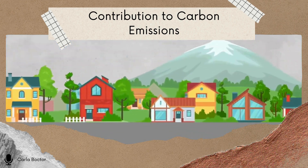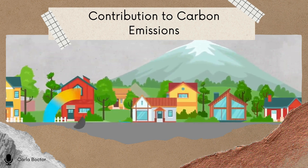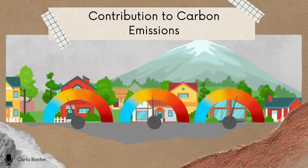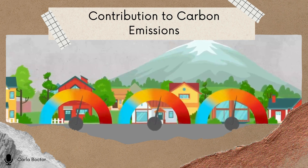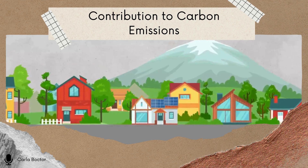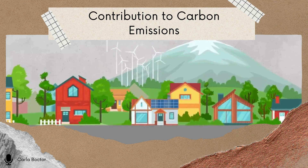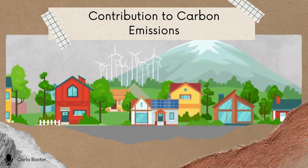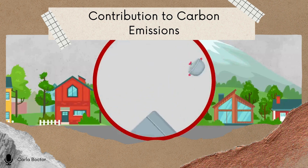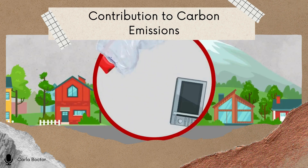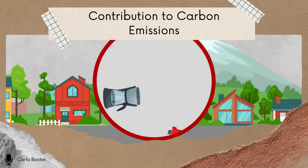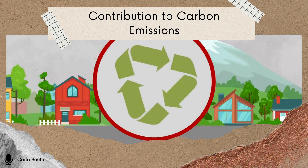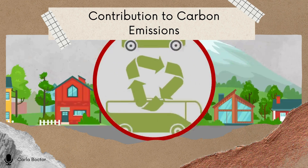The place you live also contributes to your personal footprint. It's important to make sure your home is heated or cooled efficiently and is well insulated. The more you use sustainable energy like solar or wind power, the more you cut your emissions. The stuff you use at home also adds to the problem — all that plastic, metal, and cardboard takes a lot of energy to produce and dispose of. So recycling can help reduce your carbon footprint, but not as much as how you travel or heating and cooling your home.